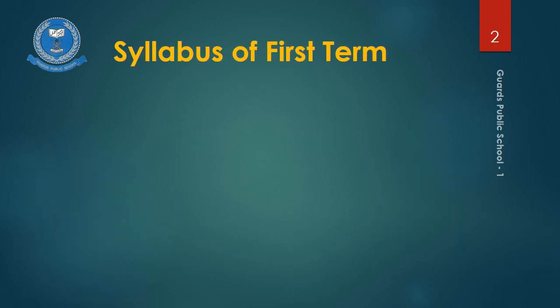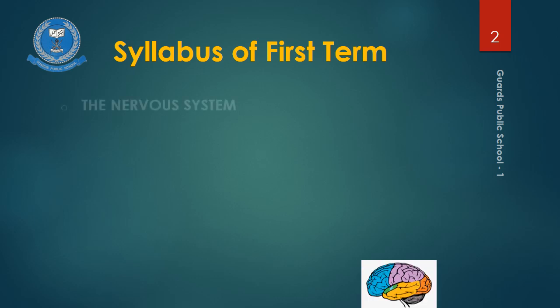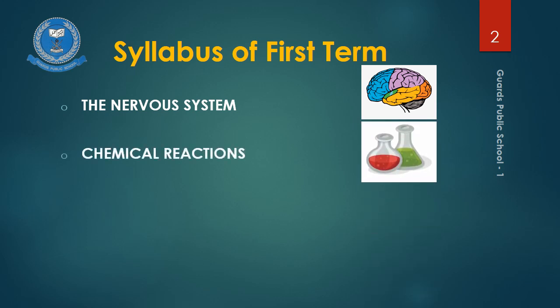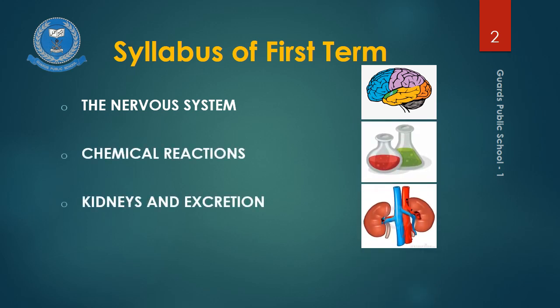Before starting today's lecture, I would like to share the syllabus of the first term 2020. The chapters included are: 1. The Nervous System, 2. Chemical Reactions, 3. Kidneys and Excretion, and 4. Pressure.